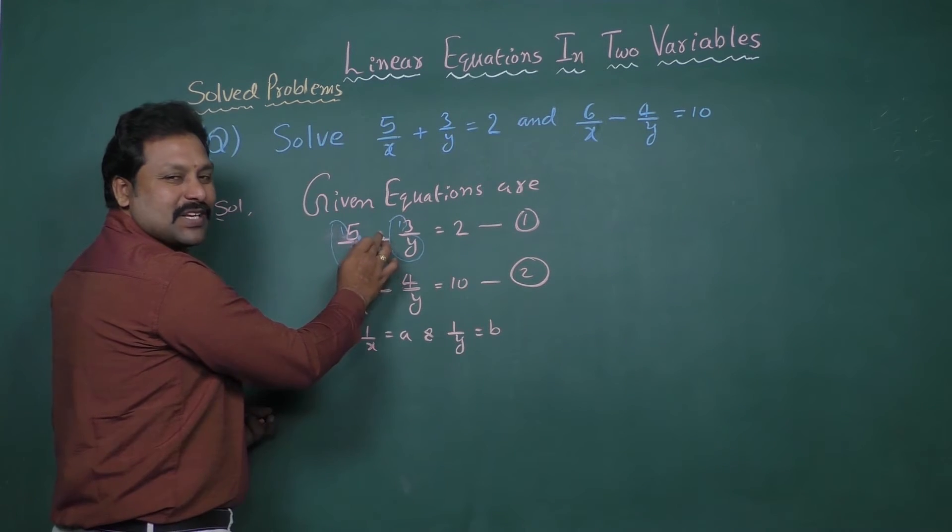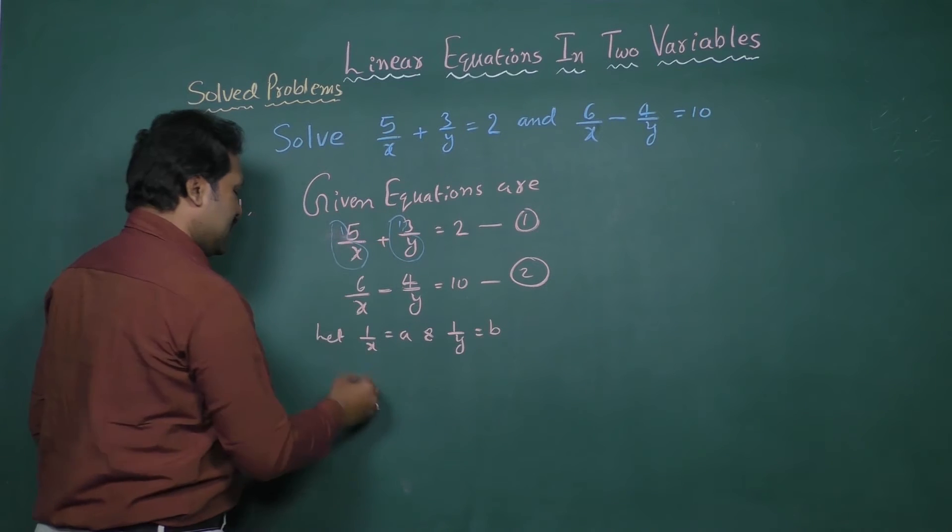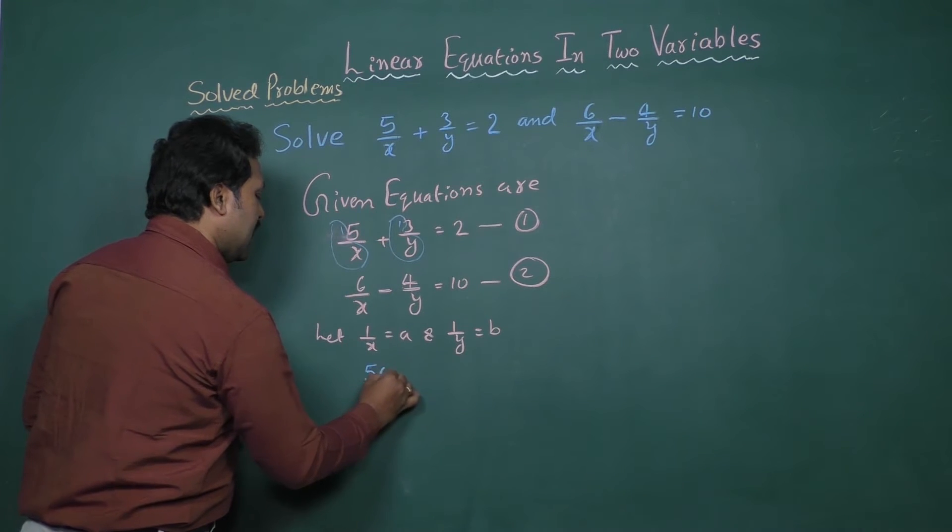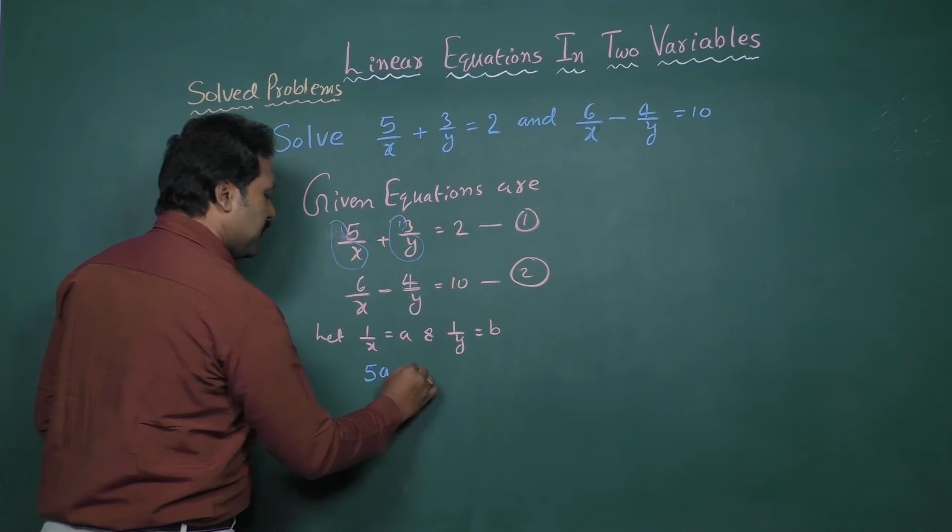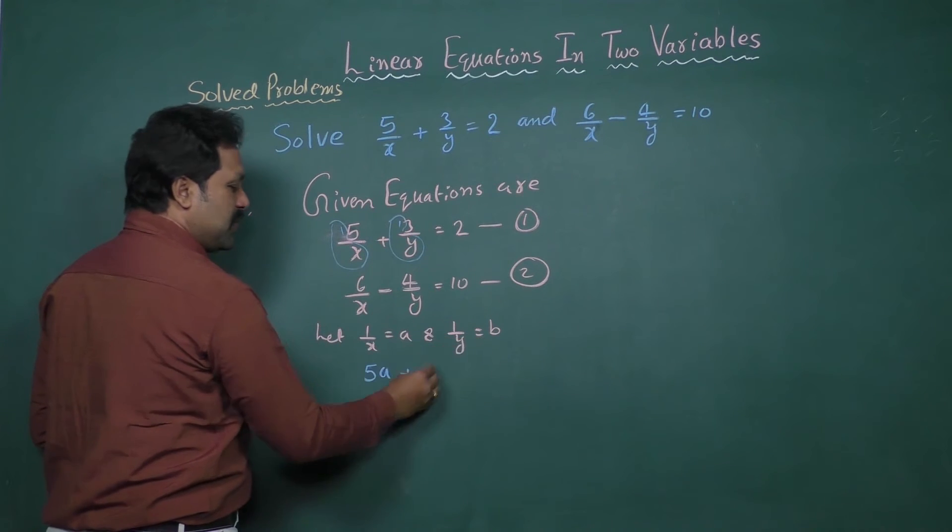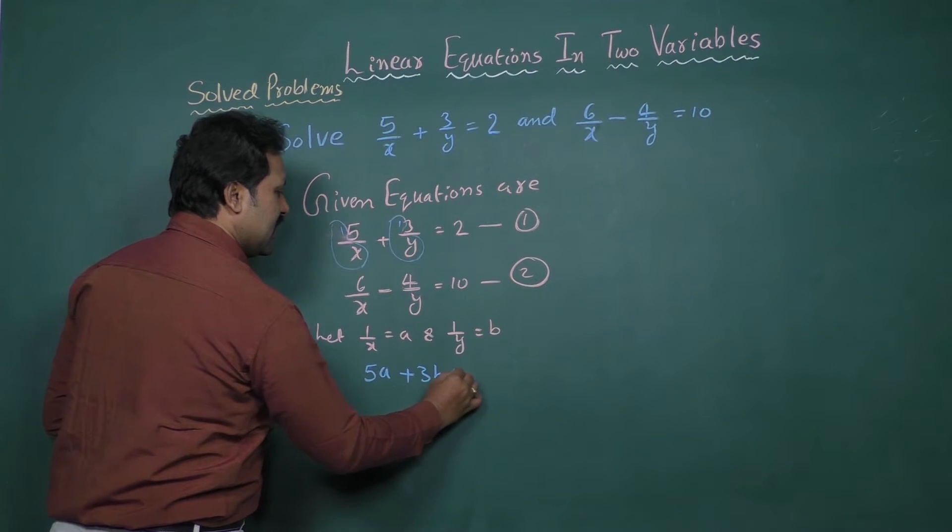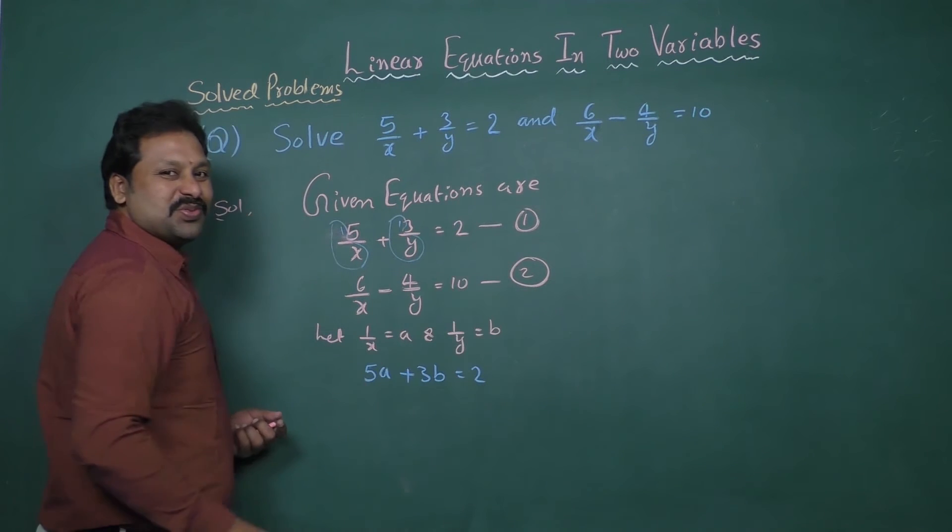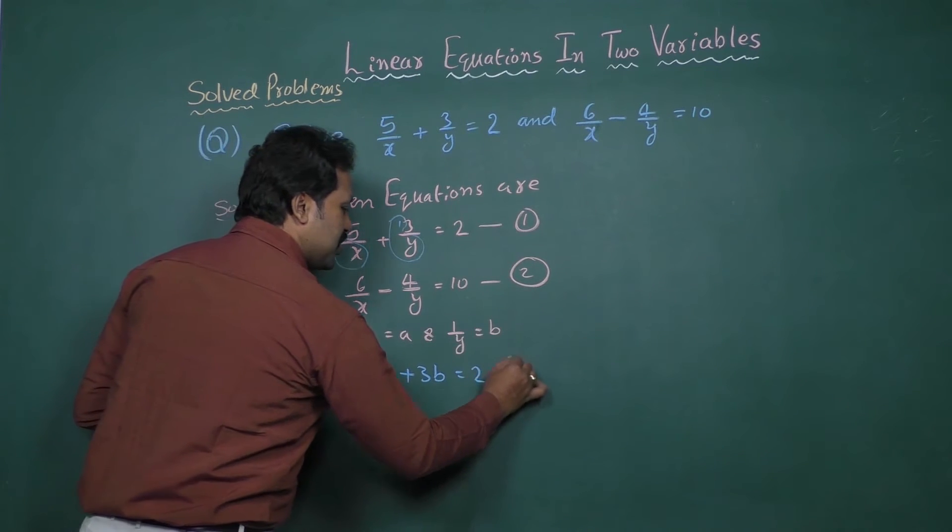Then the first equation becomes 5a plus 3b equal to 2. Let it be equation 3.